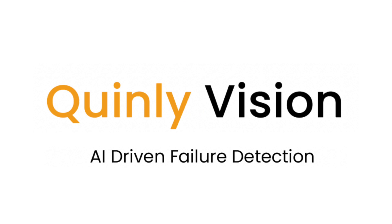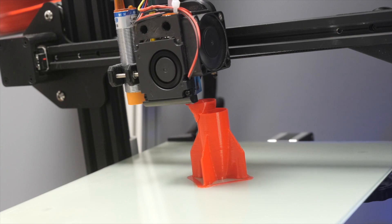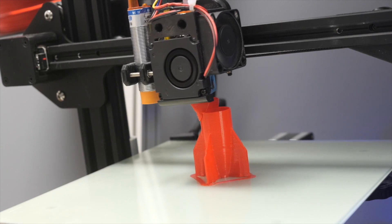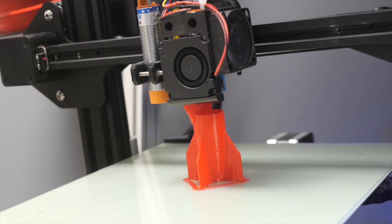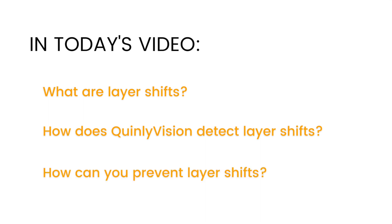Layer shifts are hard to detect with AI. They aren't as catastrophic as spaghetti and they can be kind of subtle sometimes — in some cases they'll even look like a normal 3D print. So today I'll talk about what layer shifts are, how Quinly Vision detects them, and what you can do to prevent them from happening on your 3D prints.